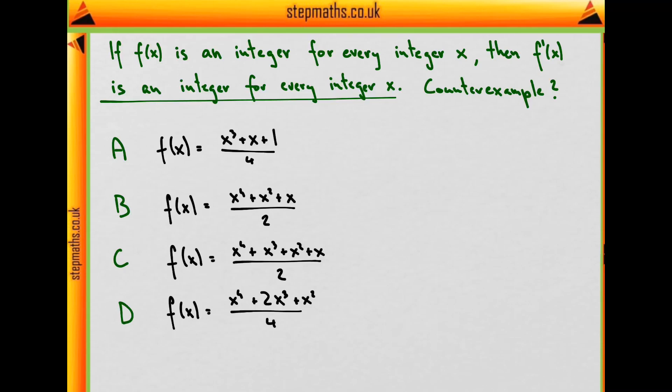There are some special functions like f(x) = x which do comply with this theorem. If the input is an integer, the output will also be an integer. The derivative f'(x) in this case is just 1, the same for every input. So this function has an integer value for every input x. But this is a very special function, and there will be many which violate the theorem. We are supposed to pick one of these four options which is a good counterexample to this statement.